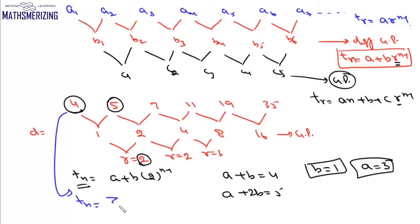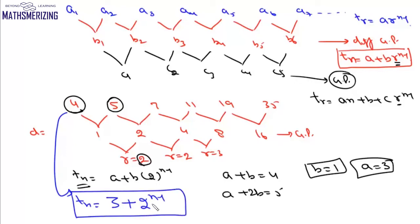Verifying: putting n = 1 gives 4; n = 2 gives 3 plus 2 = 5; n = 3 gives 3 plus 4 = 7; n = 4 gives 3 plus 8 = 11. This is how we generate the nth term for a sequence whose successive differences are in GP.